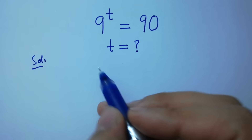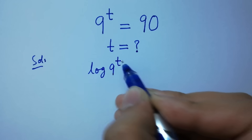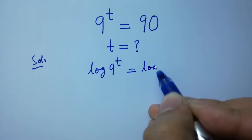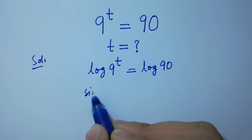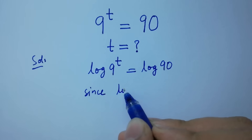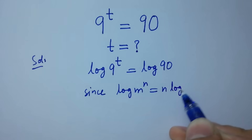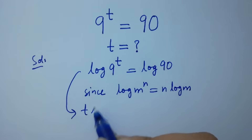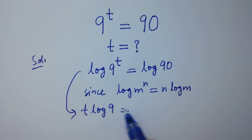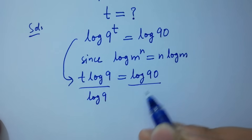Take log on both sides. Log 9 to the power t equals log 90. Since log m to the power n equals n log m, then it will be t log 9 equals log 90. Divide by log 9 on both sides.